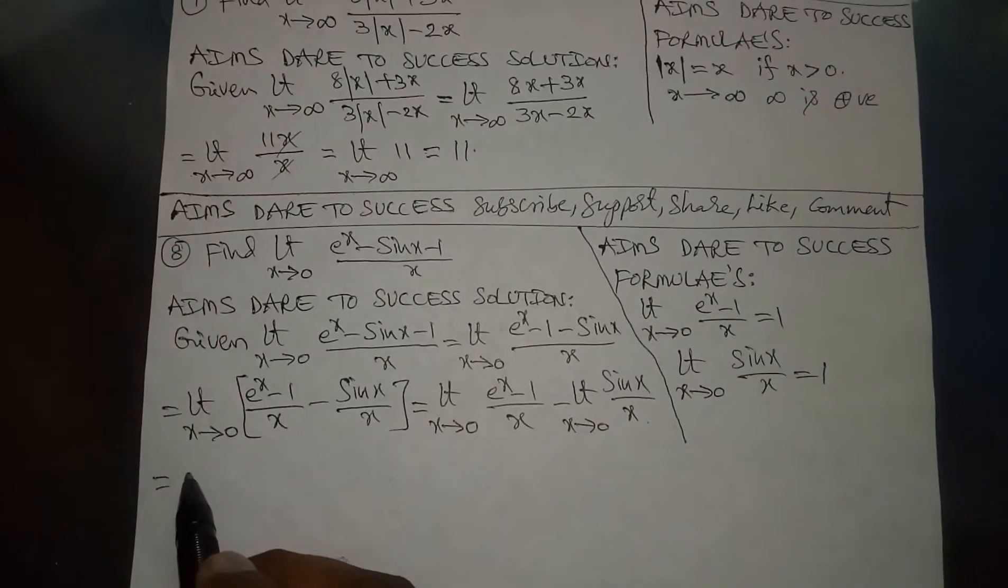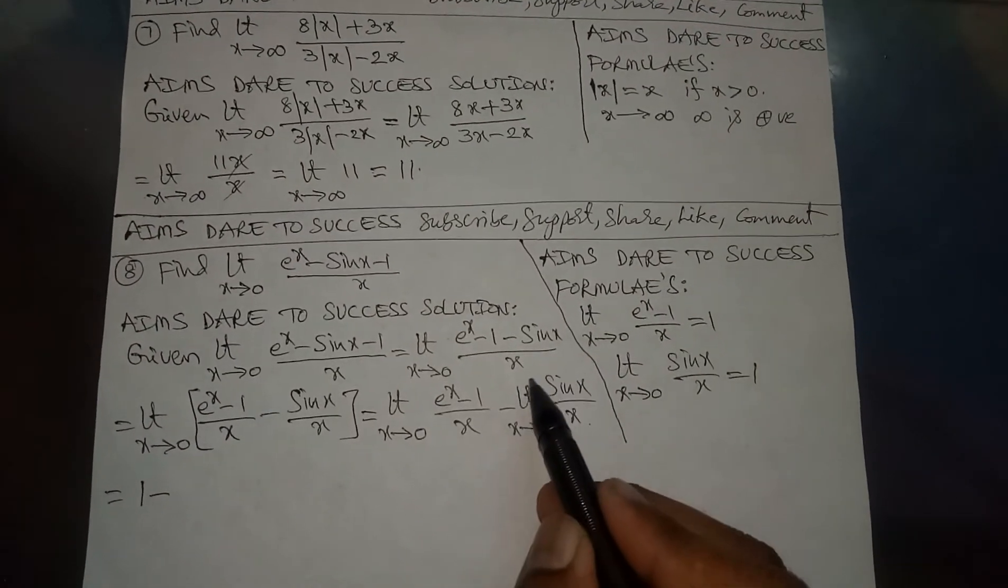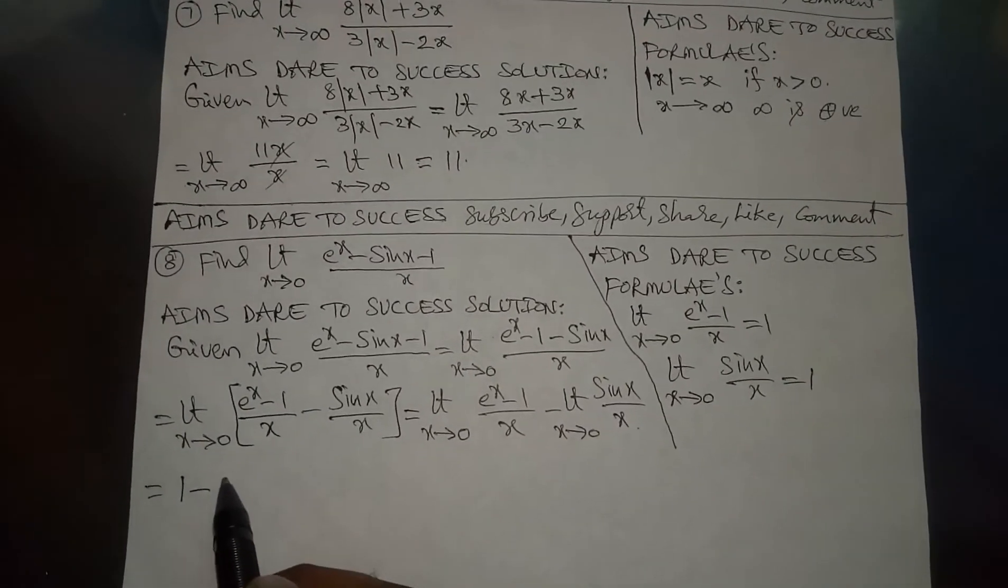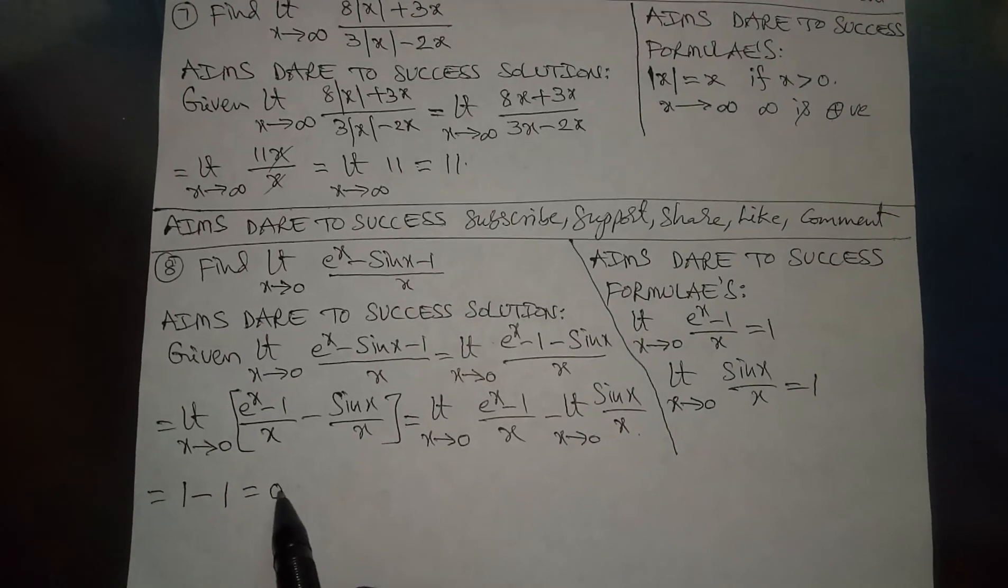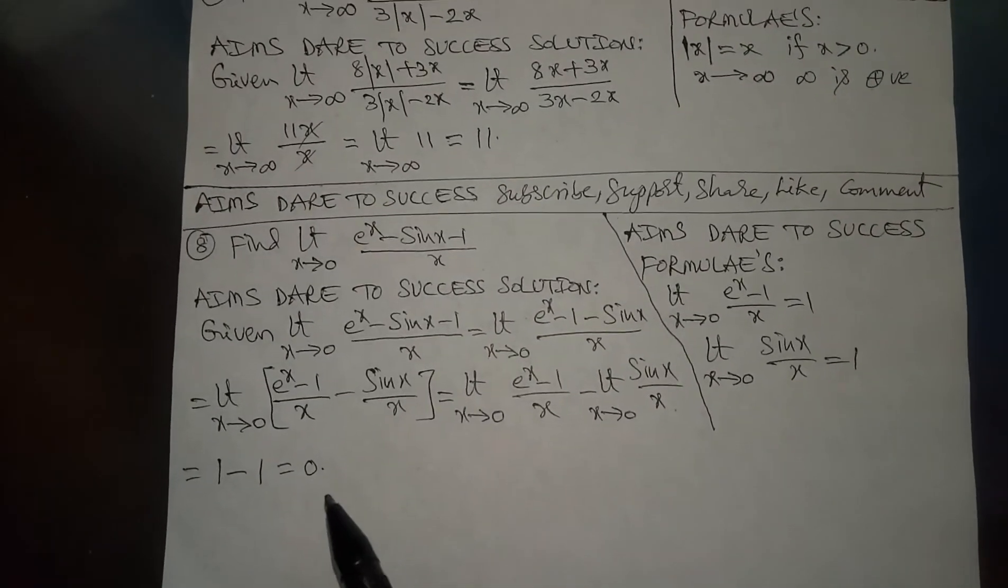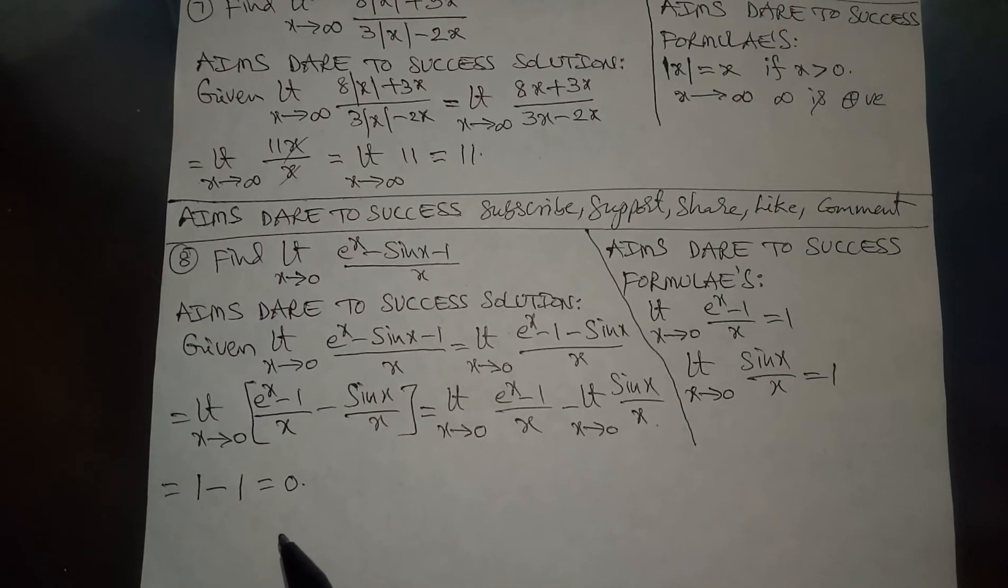...value 1 minus limit x tends to 0 of sin x / x equals 1. 1 minus 1 gets cancelled, equals 0. Joy of sharing is caring and helping. Thank you.